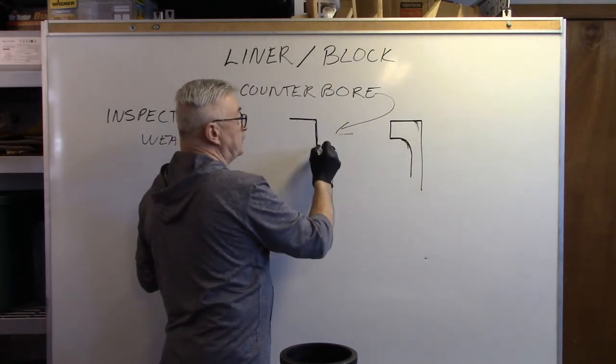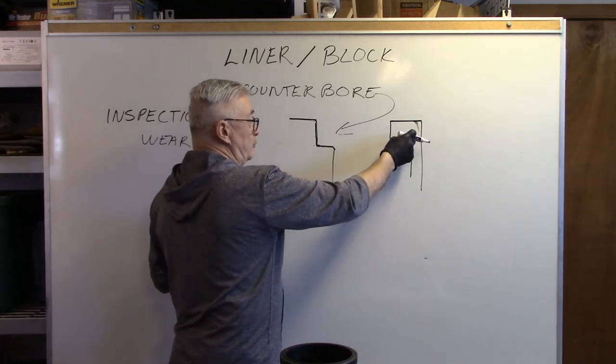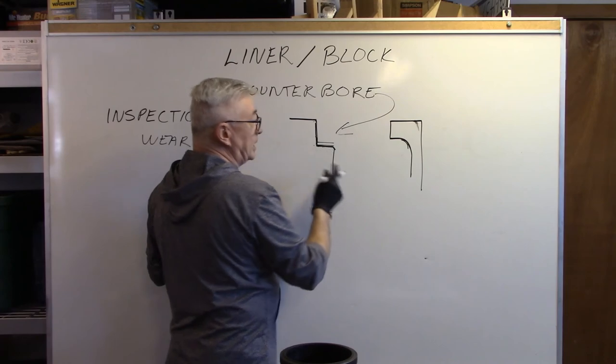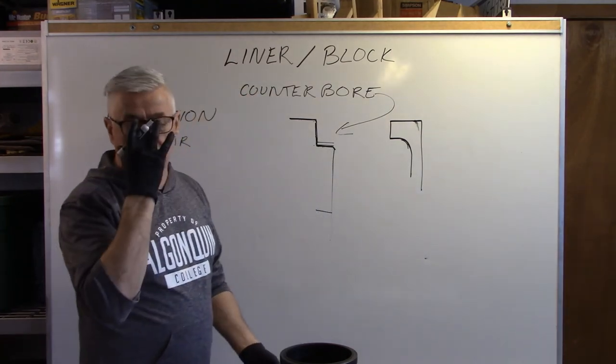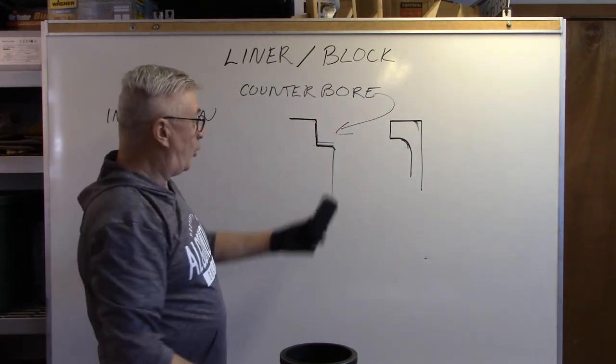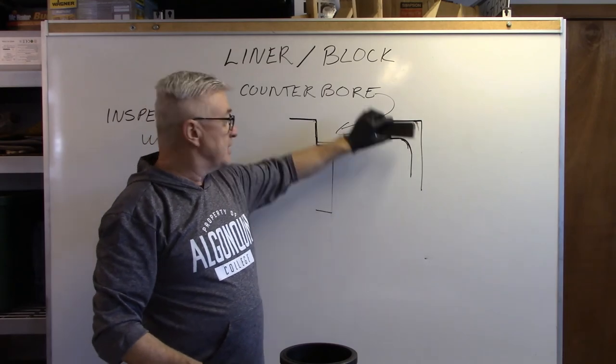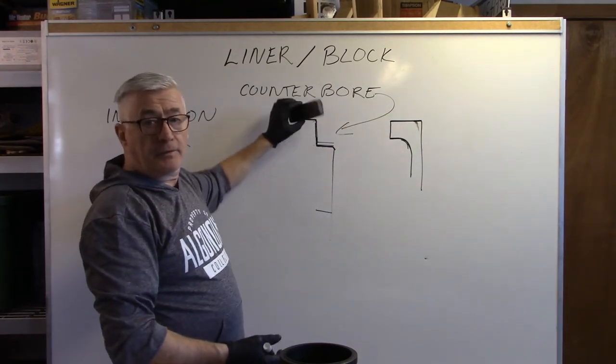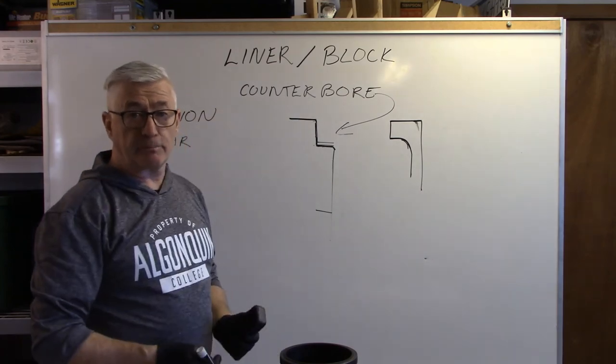Now whatever we've removed from here. If I'm going to reuse the liner. I'm going to have to add in a shim equal to the amount that I have removed. In order to keep everything equal. Or if I'm installing new liners. Measure my flange thickness. And adjust the shim. To make sure that I have the correct protrusion.